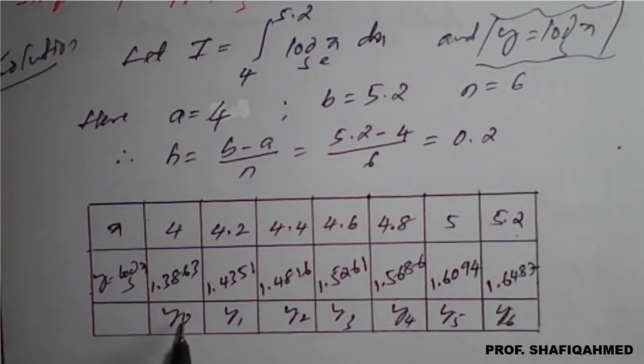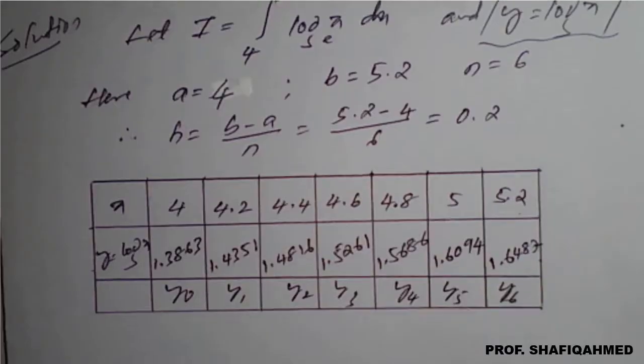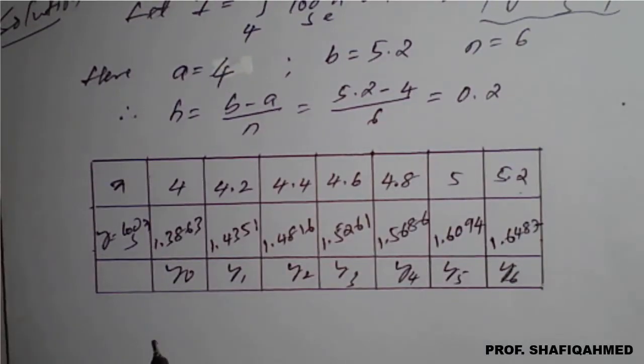With respect to this, we have y0, y1, y2, y3, y4, y5, and y6. Now we will use Weddle's rule.